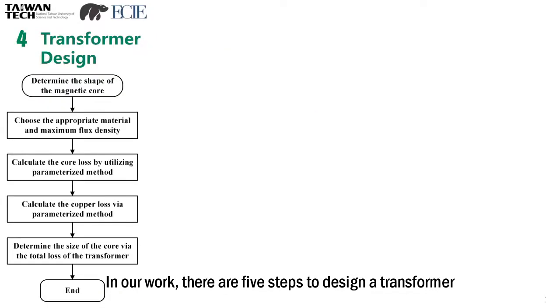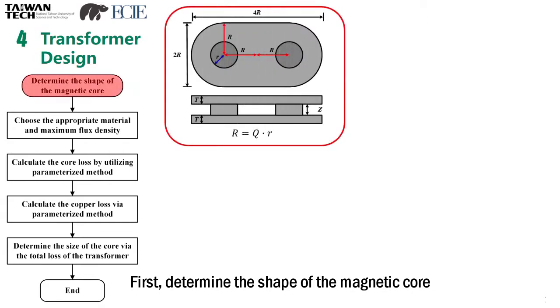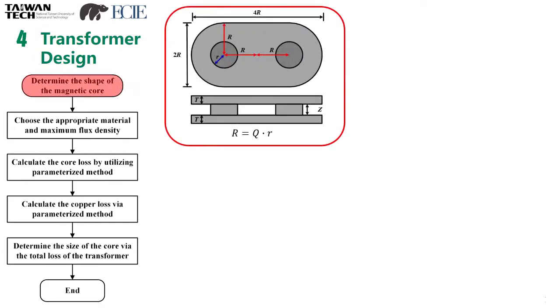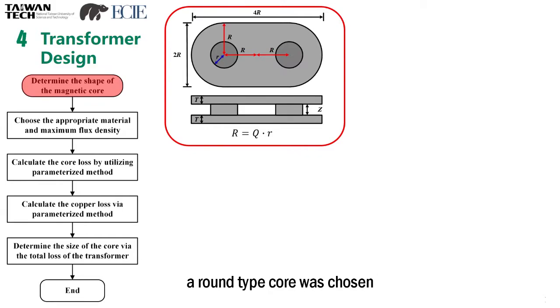In our work, there are five steps to design the transformer. First, determine the shape of the magnetic core. Because the round type core can make the flux distribution even and reduce the length of the winding, a round type core was chosen.